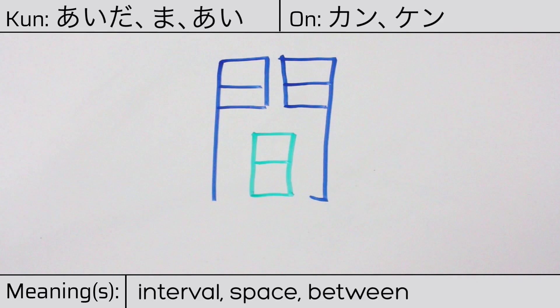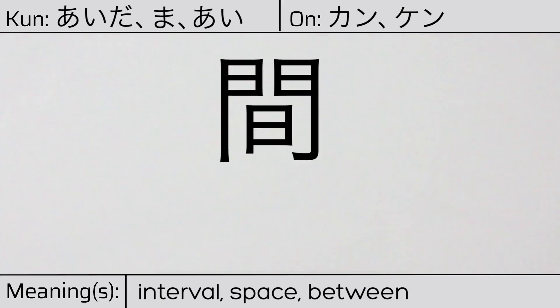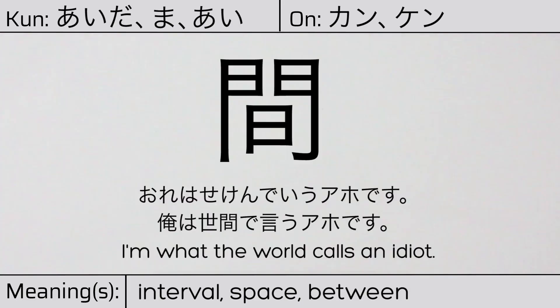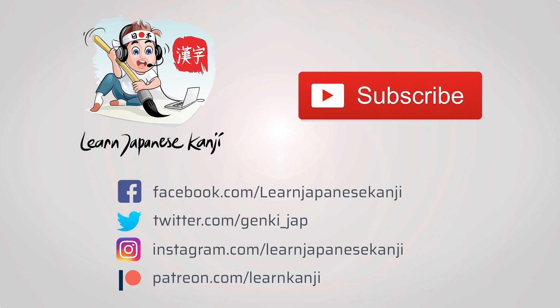You can remember this kanji by the following hint: The sun viewed through the open gate during a certain interval of the day. Our example sentence is: 俺は世間で言うあほです。 I'm what the world calls an idiot. We hope you have enjoyed this quick kanji lesson. Maybe you'll like some of our others. Make sure to leave a comment with an example sentence of your own.